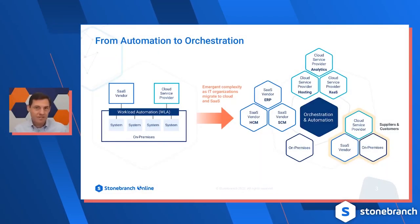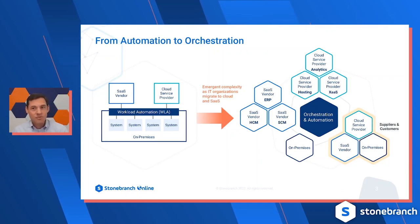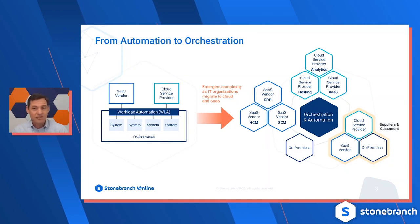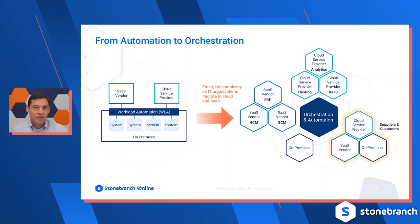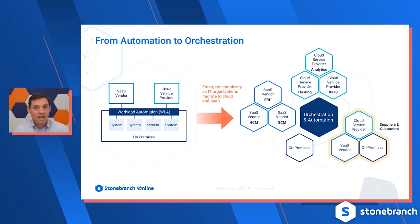We're in a trend of moving from on-premise systems to what we call hybrid IT. Hybrid IT involves more sophisticated automation across systems in the cloud, more SaaS-oriented systems, and open-source technologies we might be using to build applications. These extensions are meant to talk to any of these different new platforms that we're doing automation with.